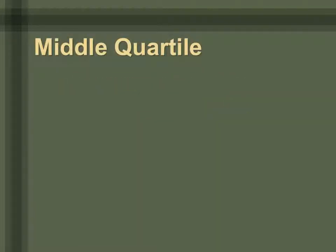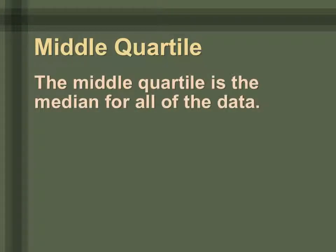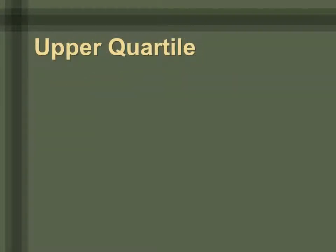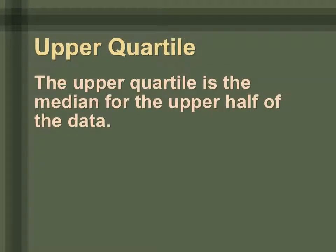The middle quartile is just the median — the median for all the data, found the same way we learned previously. Then you have the upper quartile, which comes from the upper half of the data. Take the upper half and find the median of that upper half.